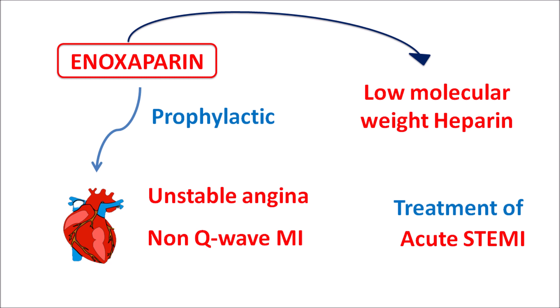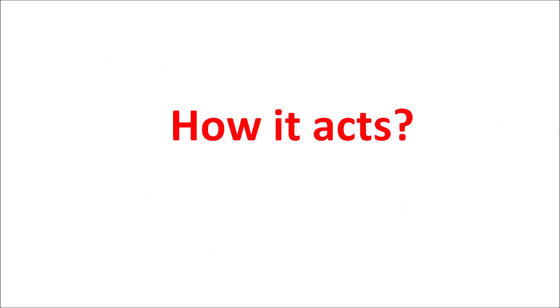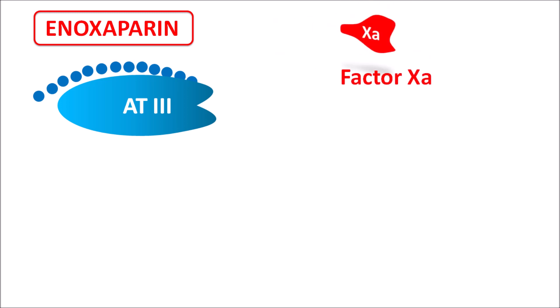Now let us look at the mechanism of action. Enoxaparin mainly acts on clotting factors, and its key target is antithrombin 3. Being a low molecular weight heparin, enoxaparin binds to antithrombin 3 and increases its activity. Factor 10a then binds to this activated antithrombin 3 complex, where it is inhibited. This is how enoxaparin inhibits the activity of Factor 10a.